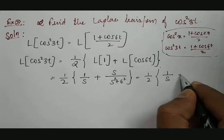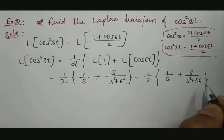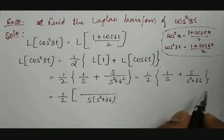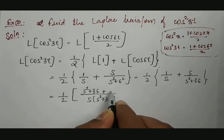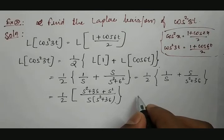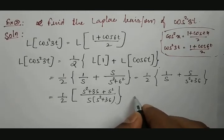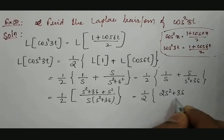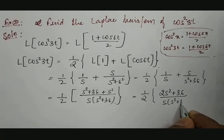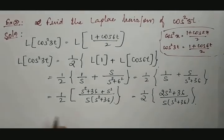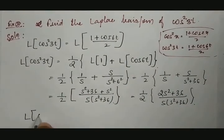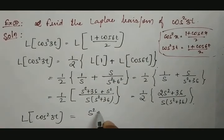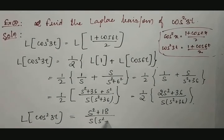That equals one-half times [1/s + s/(s² + 36)]. Taking the LCM, it becomes one-half times [s(s² + 36) in the denominator], with the numerator being (s² + 36) + s·s, which gives 2s² + 36 in the numerator. Taking 2 common from the numerator, it cancels with the one-half factor. So the Laplace transformation of cos squared 3t equals (s² + 18) divided by s(s² + 36).